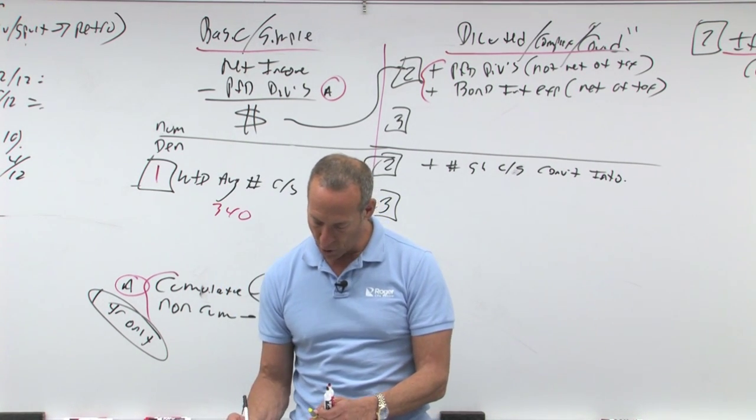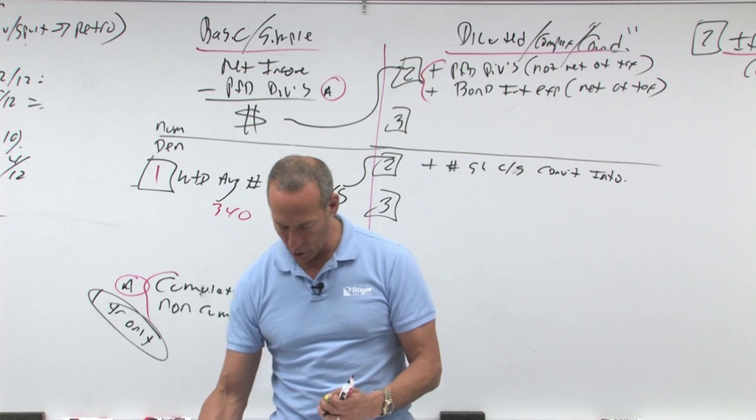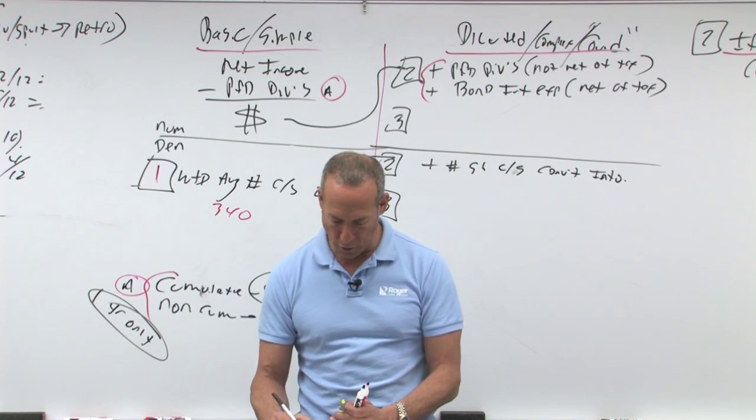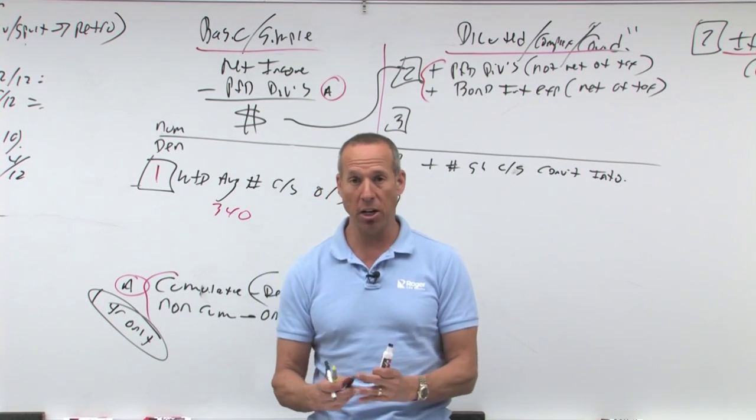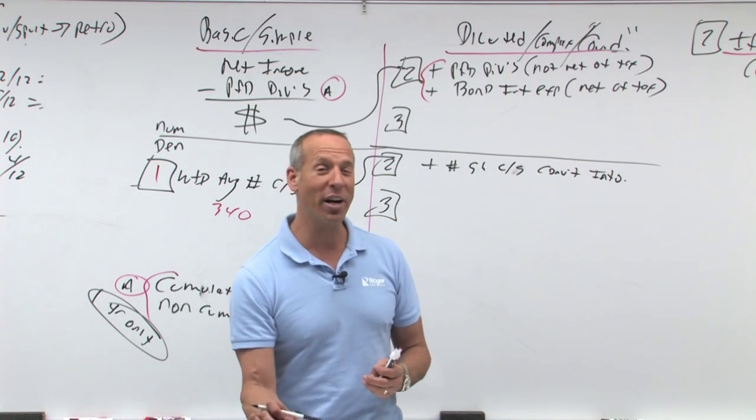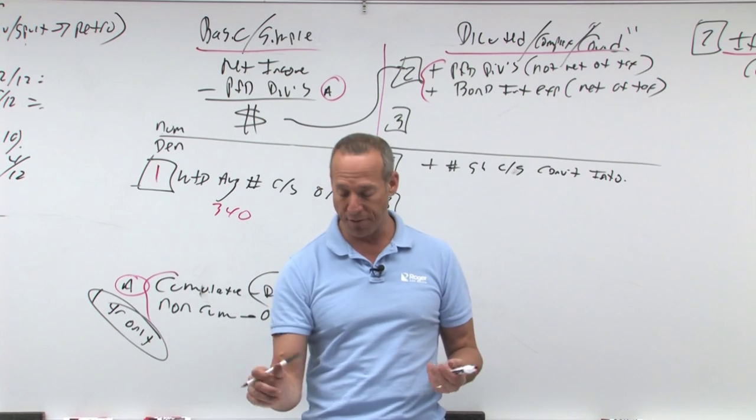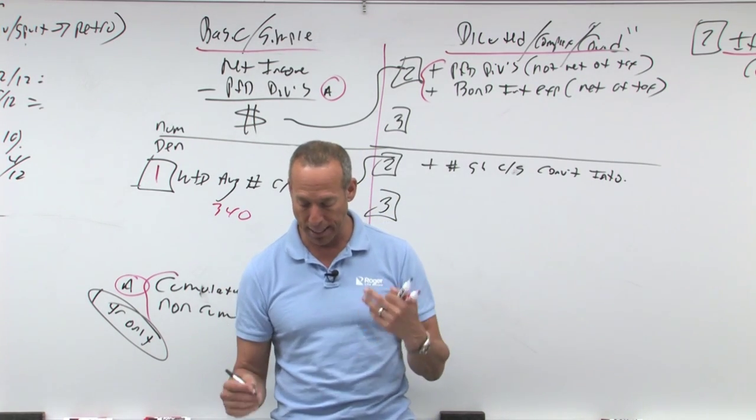No weighting is required. So that's an important point, that we're going to include it as of either at the beginning of the year, because you assume they could have converted all year, or if they were issued in the middle of the year, then just take half of it, because that's the earliest time that they could have converted.